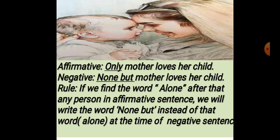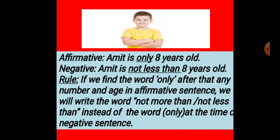Now let us start today's main discussion. First one — affirmative: 'Only mother loves her child.' Negative: 'None but mother loves her child.' You see the rule: if we find the word 'only' before any person in an affirmative sentence, we will write the word 'none but' instead of that word at the time of the negative sentence.